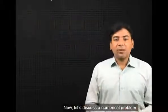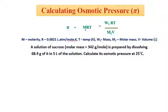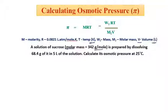Now let me discuss a numerical problem to calculate osmotic pressure. The formula is π = MRT = W₂RT / (M₂V). The R value to be used is 0.0821 L·atm/(mol·K), temperature is in Kelvin, and volume in liters. The problem says a solution of sucrose with molar mass 342 g/mol is prepared by dissolving 68.4 grams in 5 liters of solution. We need to calculate its osmotic pressure at 25°C.